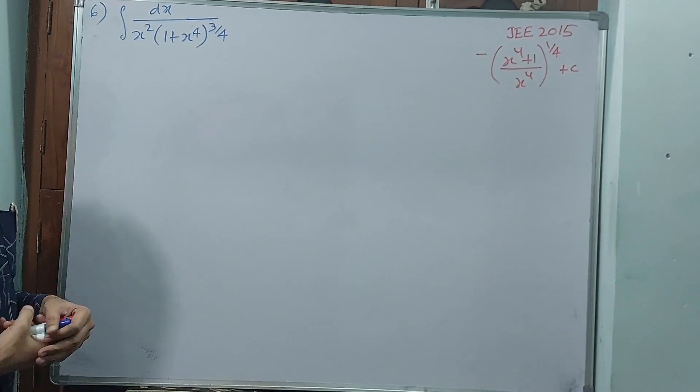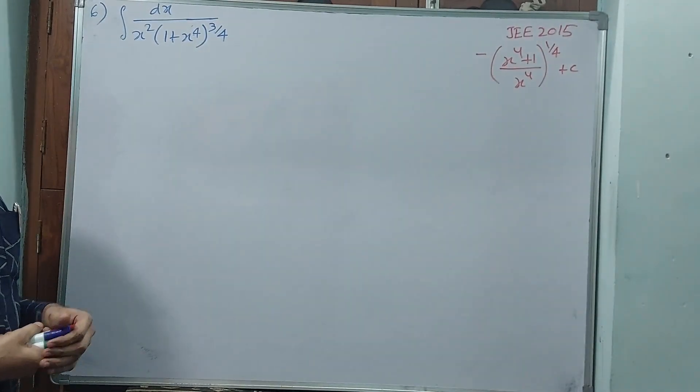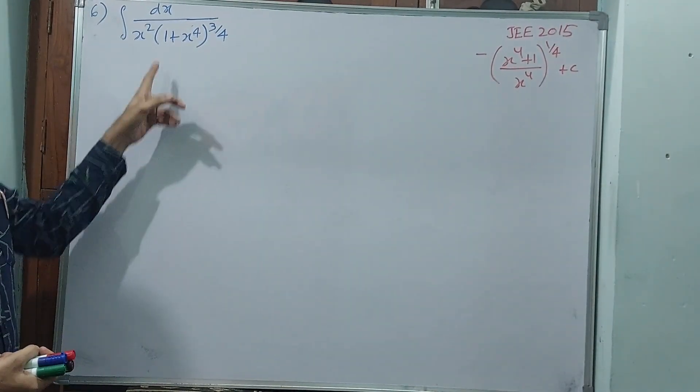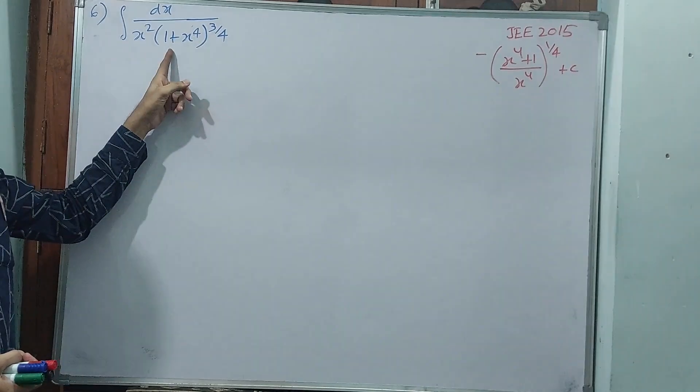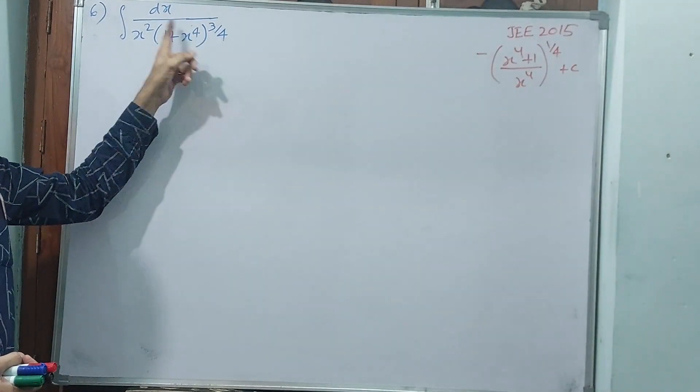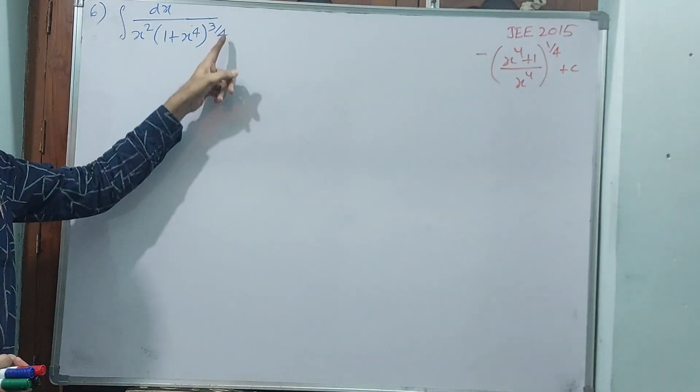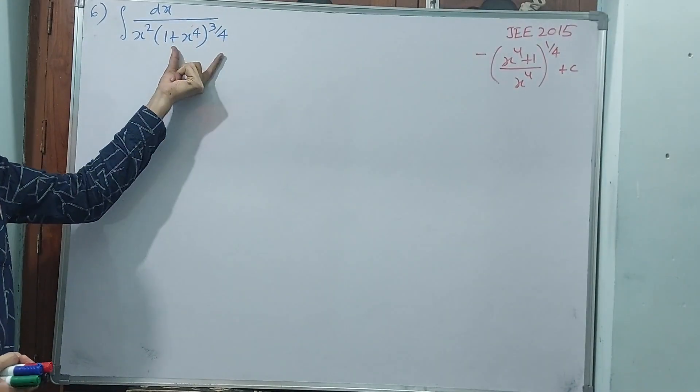See question number 6: Integral dx by x squared into (1 plus x to the power of 4) whole to the power of 3 by 4.